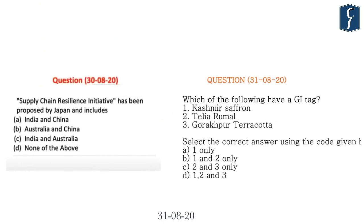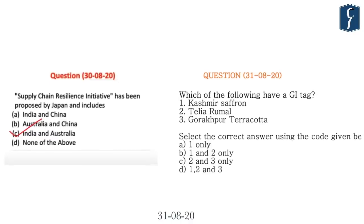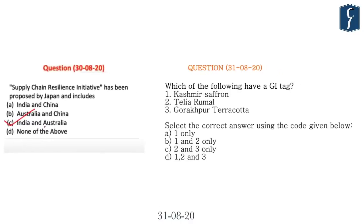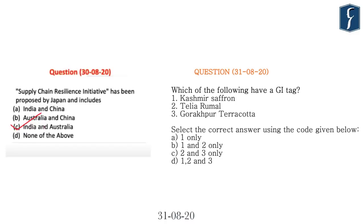The question of the day for 30th August 2020 was: 'Supply Chain Resilience Initiative has been proposed by Japan and it includes?' — the correct answer is India and Australia. The question of the day for today is: 'Which of the following have a GI tag — Kashmir Saffron, Teliya Rumal, Gorakhpur Terracotta?' Select the correct answer using the code given below: A) 1 only, B) 1 and 2 only, C) 2 and 3 only, D) 1, 2 and 3.